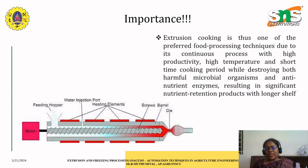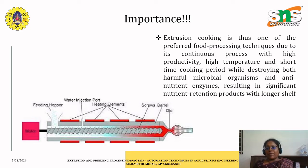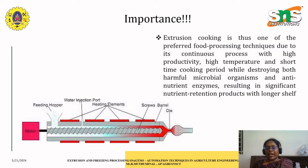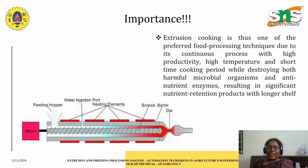The main importance of extrusion cooking is that it is a preferred food processing technique due to its continuous process with high productivity. It involves high temperature and short time cooking, which destroys both microbial organisms and anti-nutrient enzymes, resulting in significant nutrient retention and products with longer shelf life. The main aim of food processing methods is to increase the quality of the food along with shelf life.